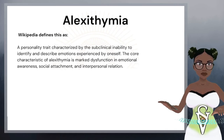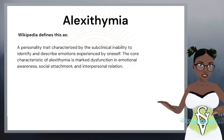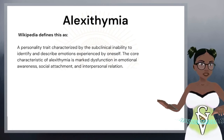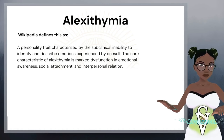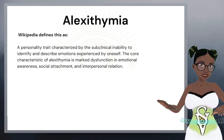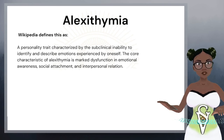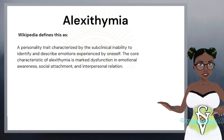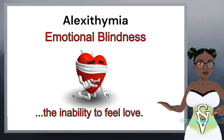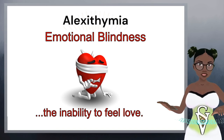Wikipedia defines alexithymia as a personality trait characterised by the sub-clinical inability to identify and describe emotions experienced by oneself. The core characteristic of alexithymia is marked dysfunction in emotional awareness, social attachment, and interpersonal relation. What we're talking about is the phenomena of, to some degree, being emotionally blind, and this can manifest as having a lack of words to describe our emotions.